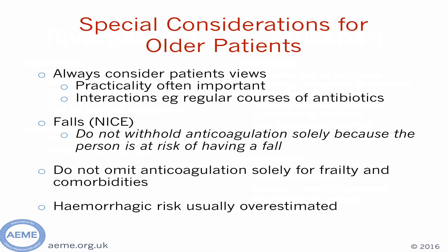When dealing with elderly patients in particular, it is important to recognise they may have different priorities to a younger patient. Practicality is often very important, and regular blood tests such as INR checks might not be appropriate for them. When it comes to patients with falls, NICE are fairly clear — we do not withhold anticoagulation solely because a person is at risk of having a fall. When it comes to frailty and comorbidities, it is easy to think this might preclude a patient from anticoagulation; however, these patients are at extremely high risk of stroke, and anticoagulation may be the appropriate option. We also know that hemorrhagic risk is often overestimated by physicians.